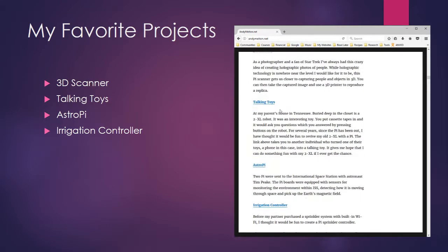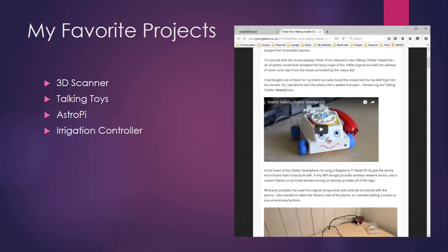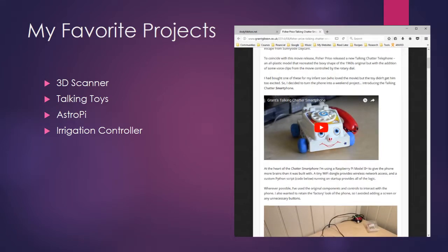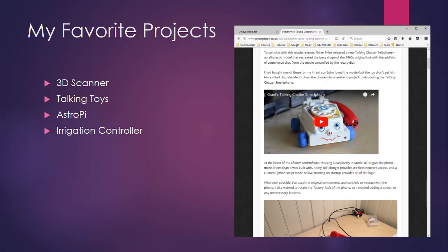One of my other favorite projects is Talking Toys. They have taken a Fisher Price Talking Telephone — this one specifically from the Toy Story franchise — and put a Raspberry Pi into it. They have made it so that when you dial one of the numbers, you can get a weather report, or another number gets you a news report and various things like that. I do recommend the video — it's entertaining.